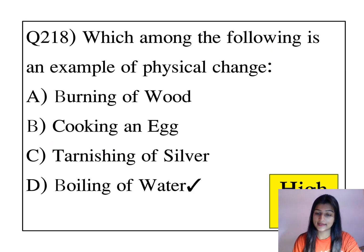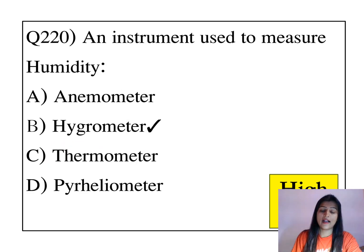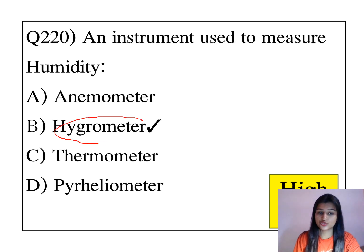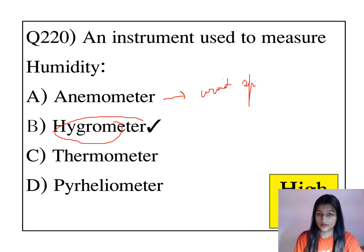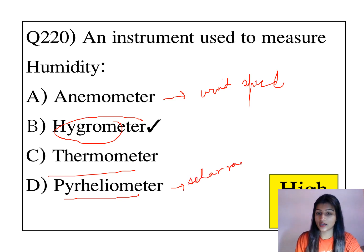A highly directional light beam is called a laser. Boiling of water is an example of a physical change. Vitamin A is also known as retinol. A hygrometer is used to measure humidity. An anemometer is used to measure wind speed. A thermometer is used to measure body temperature. A pyrheliometer is used to measure solar radiation coming from the sun.